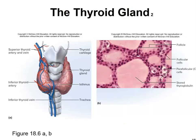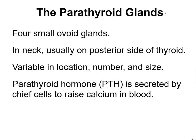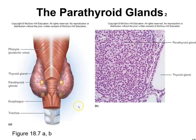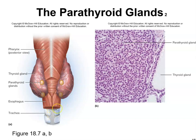The thyroid gland has two lobes connected by an isthmus adjacent to the trachea. The parathyroid glands are four small ovoid glands in the neck, usually on the posterior side of the thyroid, variable in location, number, and size. Parathyroid hormone is secreted by chief cells to raise calcium in the blood. Because they're located posteriorly, they can be difficult to fully remove during thyroid cancer surgery. The esophagus, trachea, thyroid, and parathyroid glands — representing endocrine, digestive, and respiratory systems — are all closely intertwined in this region.